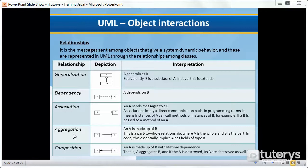Then we have the aggregation relationship. An A is made up of B. This is a part-to-whole relationship where A is the whole and B is the part. In code, this essentially implies A has fields of type B.